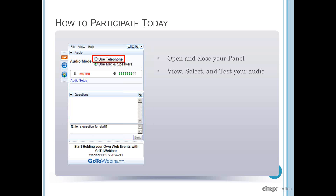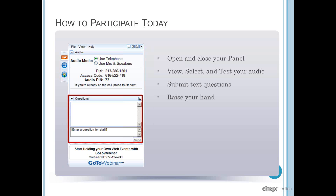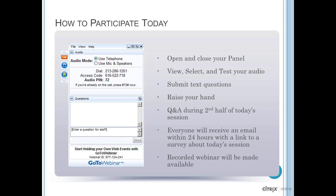If you prefer, you can join the audio via telephone, which we do recommend, by selecting Use Telephone. The dial-in information will be displayed, including an audio pin. If you would like to ask any questions of today's presenters over the phone, you must enter your audio pin in order to have your line unmuted. During the presentation, you will have the ability to send questions through the questions panel — simply type in your question and click Send. You can also raise your hand to indicate you have a question and would like your line unmuted.